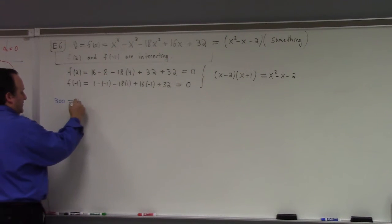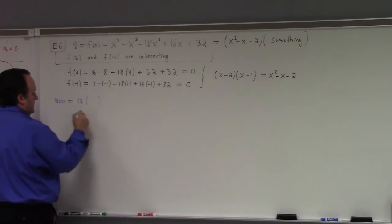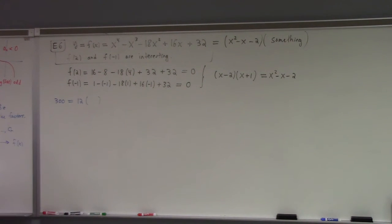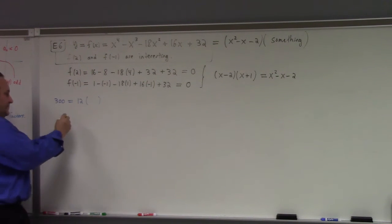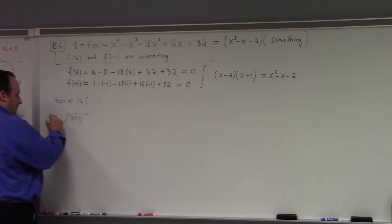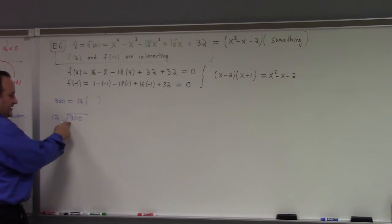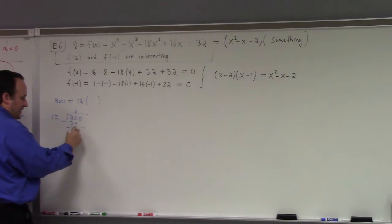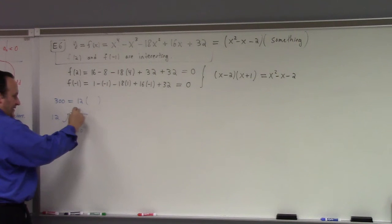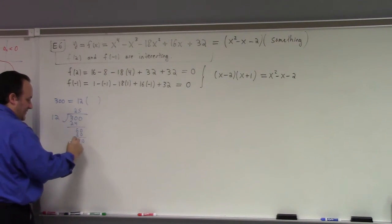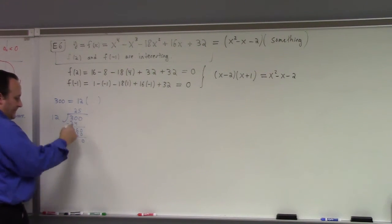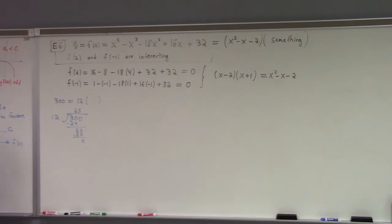300, it's equal to 12 times something. How do you find the something? Here's how you could do it. You take 300 and you divide 12 into it. How many times does 12 go into 30? It goes in twice. So, you get 24. You subtract. You get 60. And then that gives you a 5. You bring down the 60. You get the remainder 0. That tells me that 300 is actually 12 times 25.